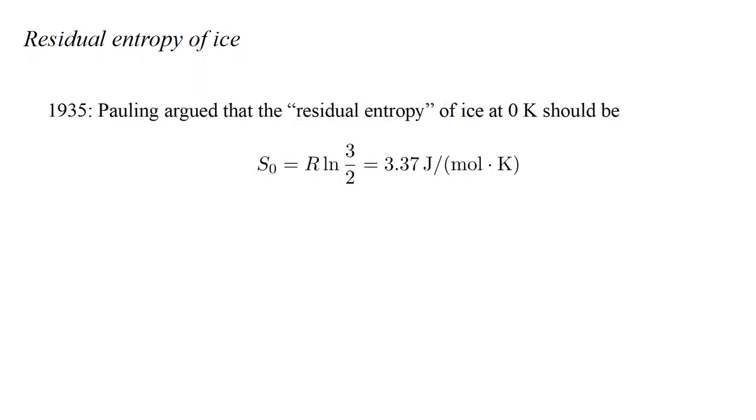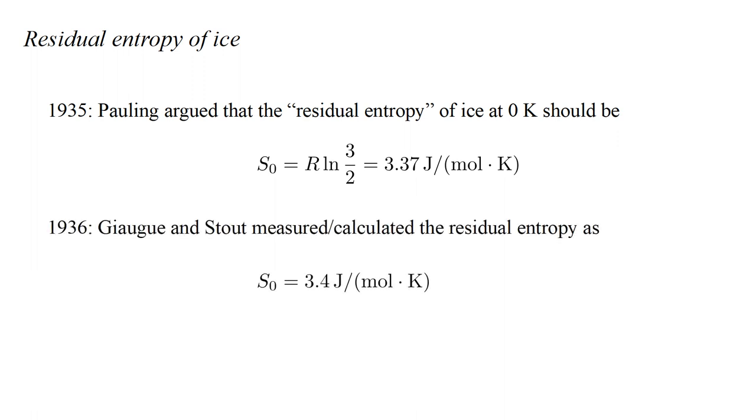In 1935, Linus Pauling used this logic to argue that the residual entropy of ice at absolute zero should be r log three-halves, equal to three-point-three-seven joules per mole Kelvin. In 1936, G. Oak and Stout used measurements and calculations to establish the actual residual entropy as three-point-four joules per mole Kelvin, in excellent agreement with Pauling's prediction.